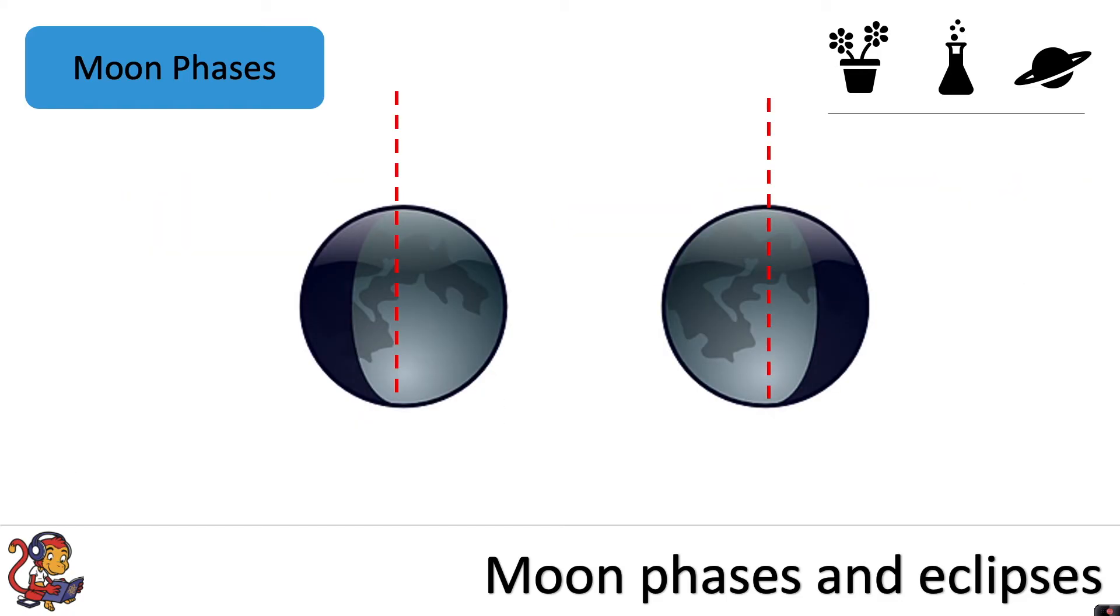When you look up at the Moon here's a neat trick to give you some information about what phase is coming next. If you place an imaginary line down the centre of the Moon and move that line until you hit the edge of where you see the Moon begin you will notice that some Moon phases make the shape of the letter B and some Moon phases make the shape of the letter D.